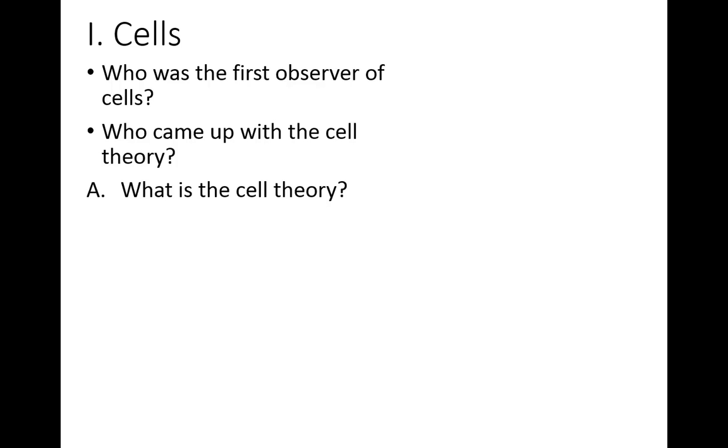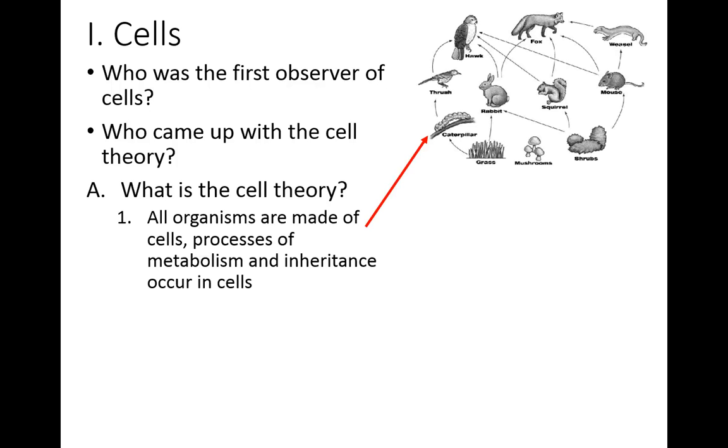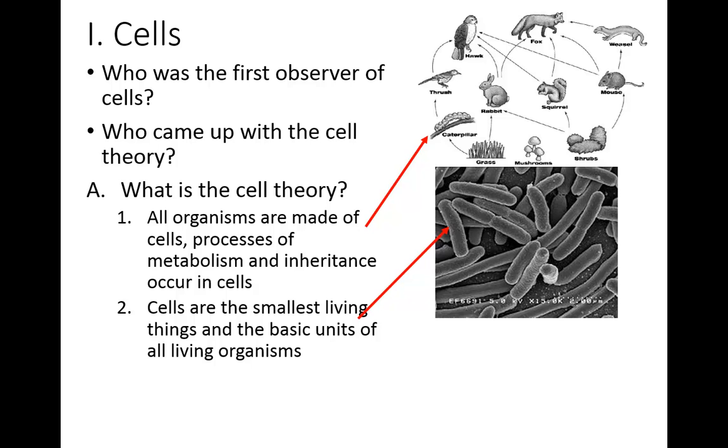There are essentially three parts to the cell theory. The first one is that all living things are made out of cells. And if it is made of cells, it's called an organism. And the processes of metabolism, which is how an organism gets energy, and inheritance found in DNA, occurs in the cells. So passing information from one generation to the next, or from one cell division to the next, occurs within the cells. Cells are also the smallest living thing and the basic units of all living organisms.